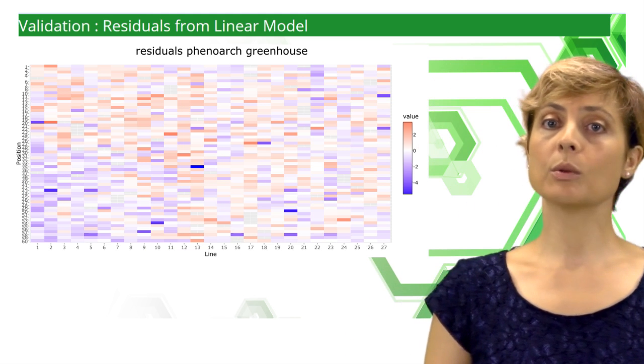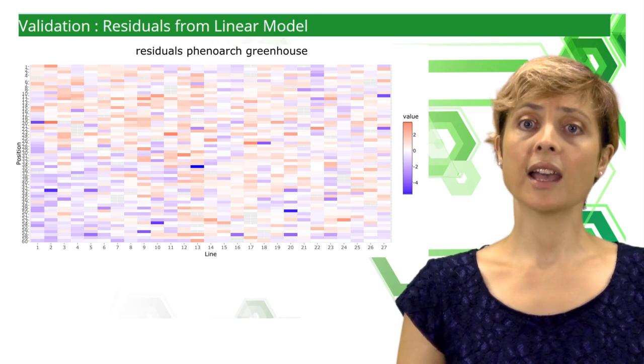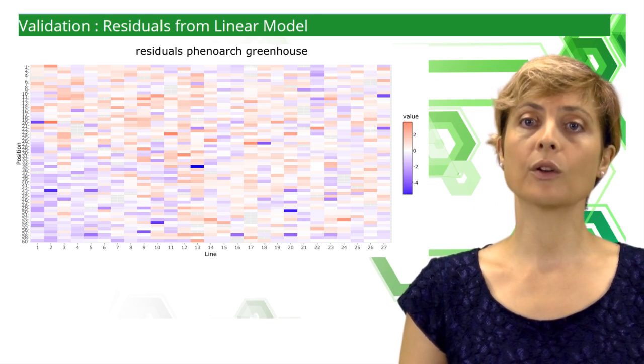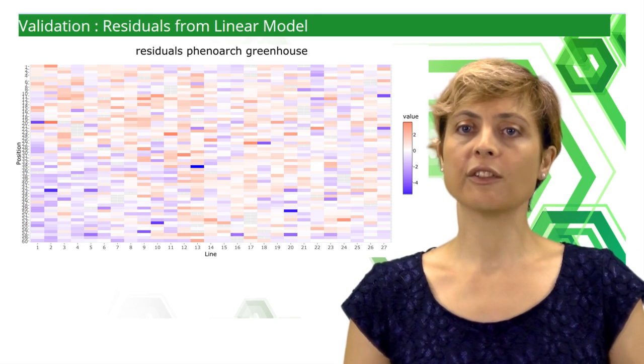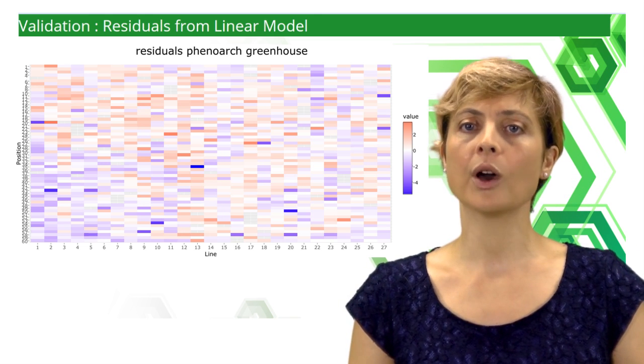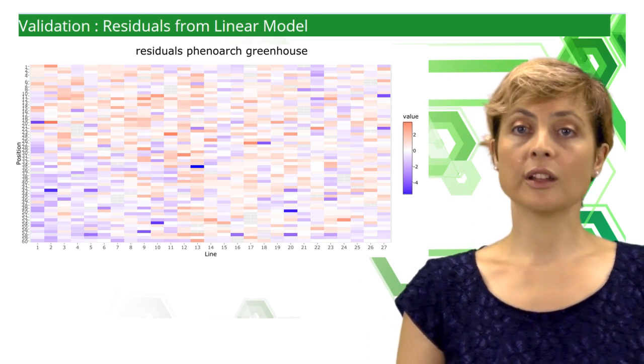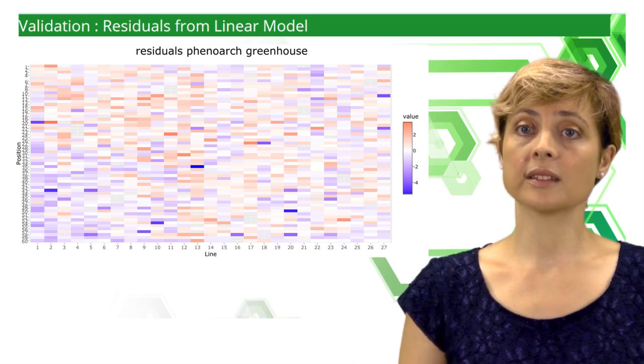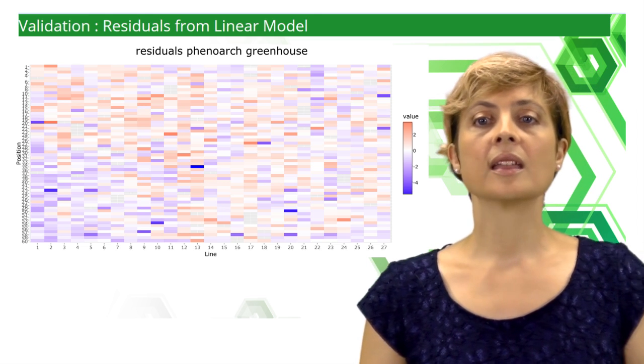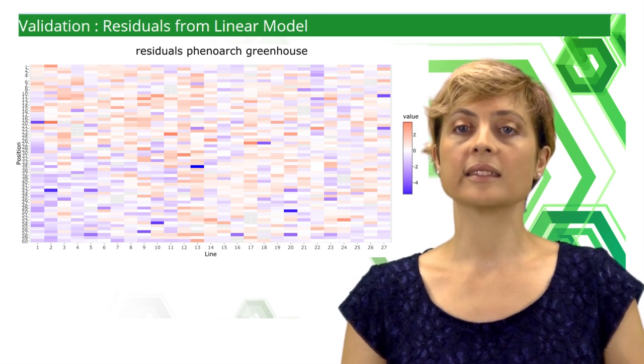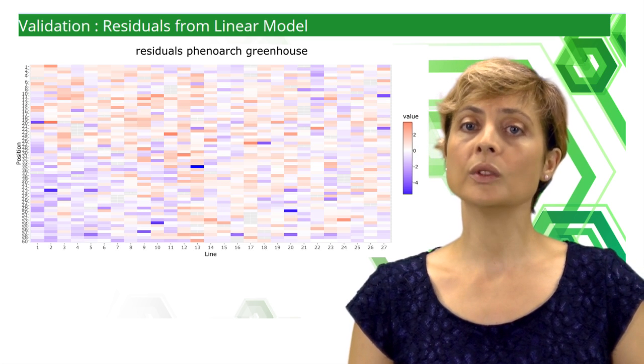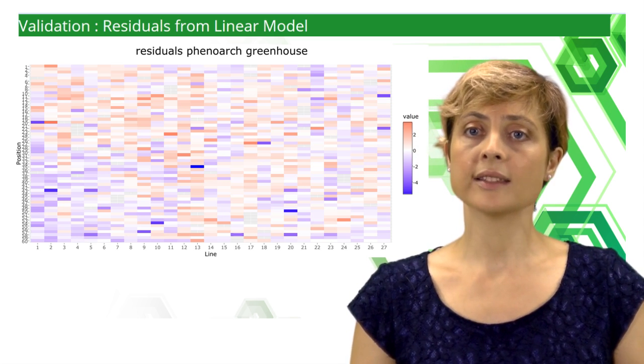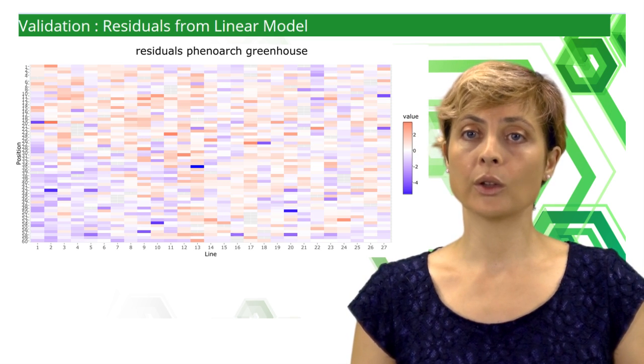This heat map of residuals shows that the height differences due to the scenario of irrigation have been wiped out and shows negative residuals in the bottom left corner of the greenhouse. The model underestimates the height of the greenhouse. Therefore, we can conclude that the genotype and its interaction with the scenario do not explain the lower heights observed in the bottom left corner of the greenhouse. A spatial structure in the residuals remains.